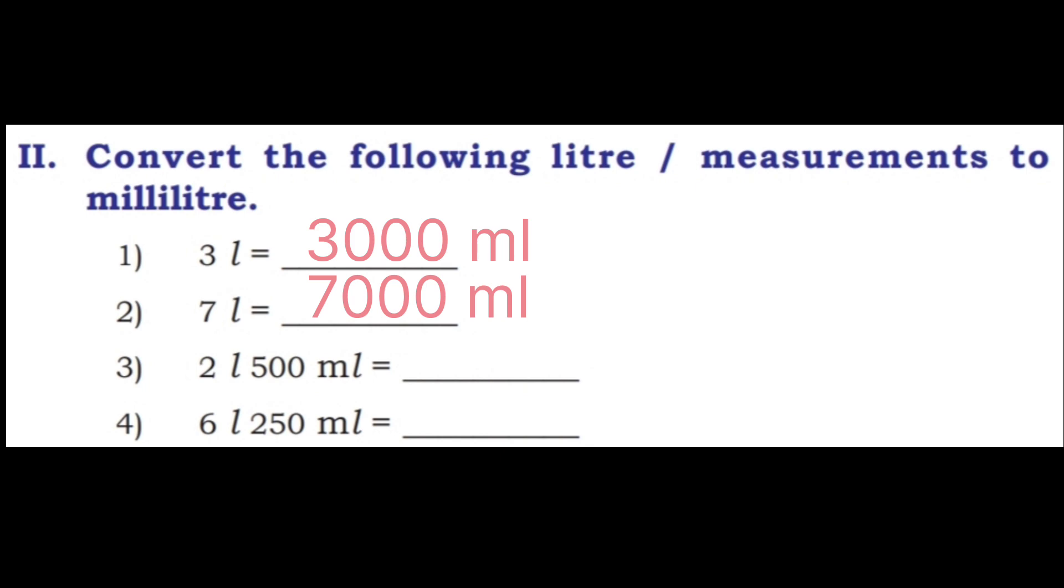2nd one, 7 liter equals 7 into 1000, 7000 milliliters.